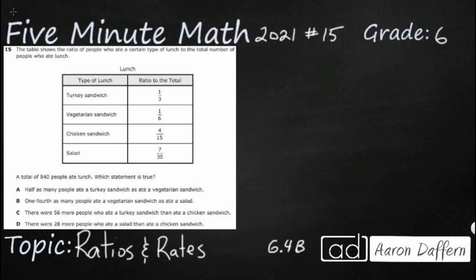Ratios are commonly displayed as fractions, so they do give us a total of 840, so that's going to be very important. So then we need to find a true statement. Let's figure out if we can put some numbers, because one-third for a turkey sandwich doesn't really help us.